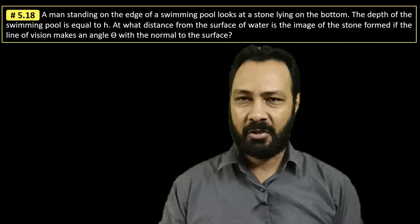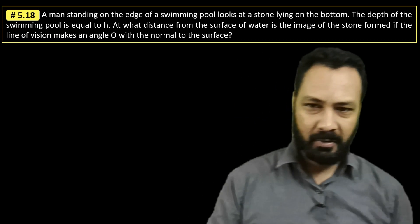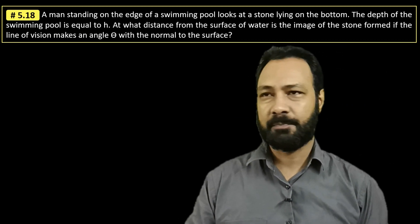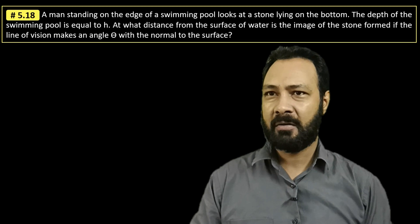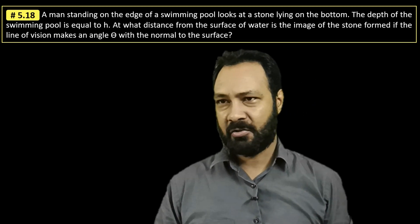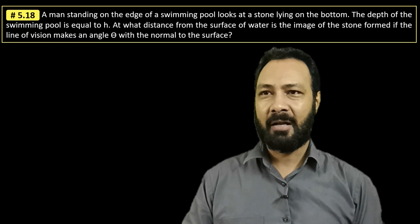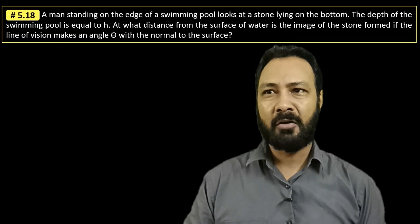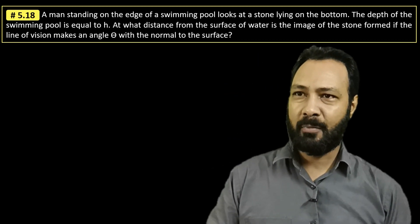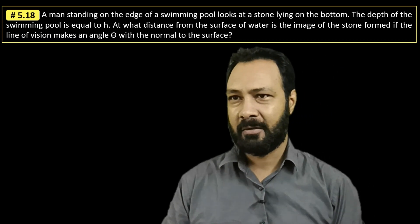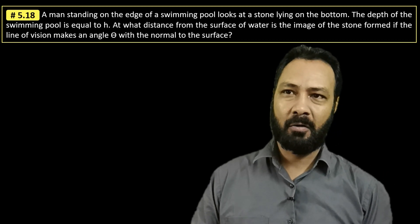Why is this question so challenging? Normally when we ask this question — that an object is put in a transparent medium and it can be seen from the other side — apparent depth is simply the real depth divided by mu-relative, which is a direct formula. But that formula assumes the observer's line of sight is along nearly the normal to the surface joining the object. Under the near-normal assumption it's a very simple formula, but here the trick is that the height of the image is different.